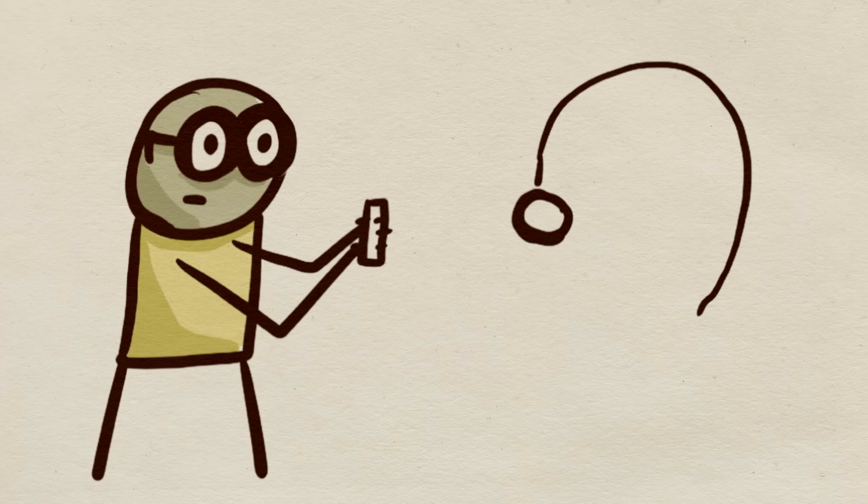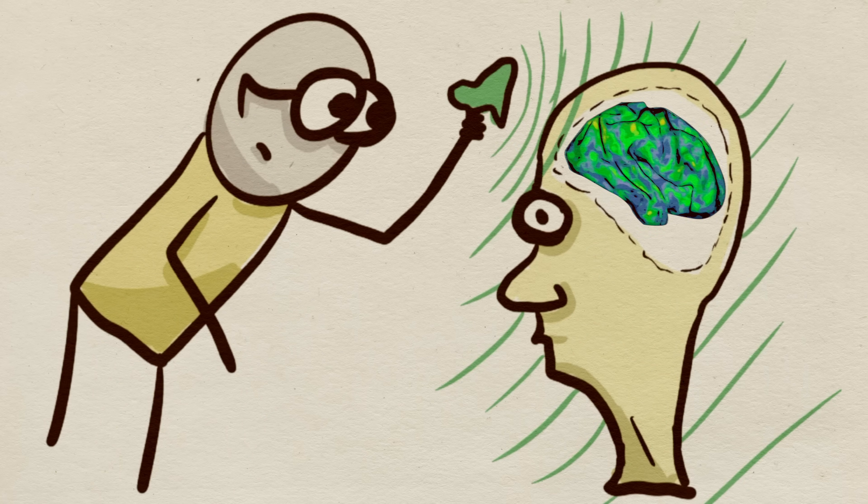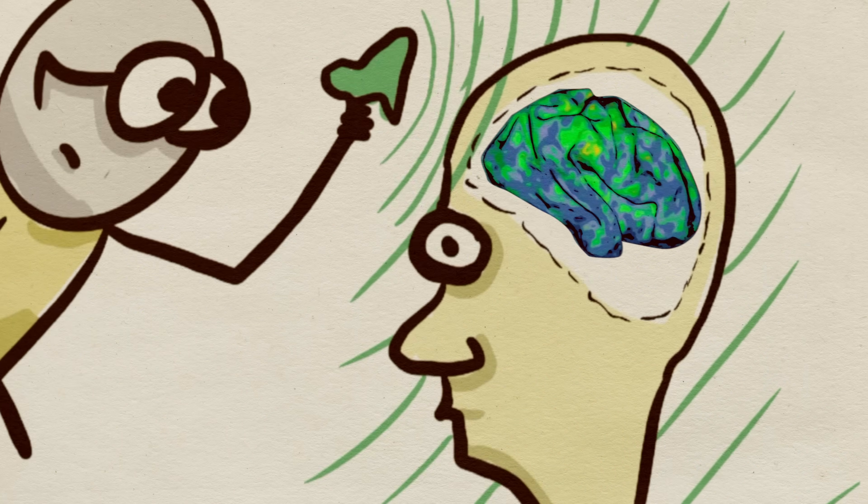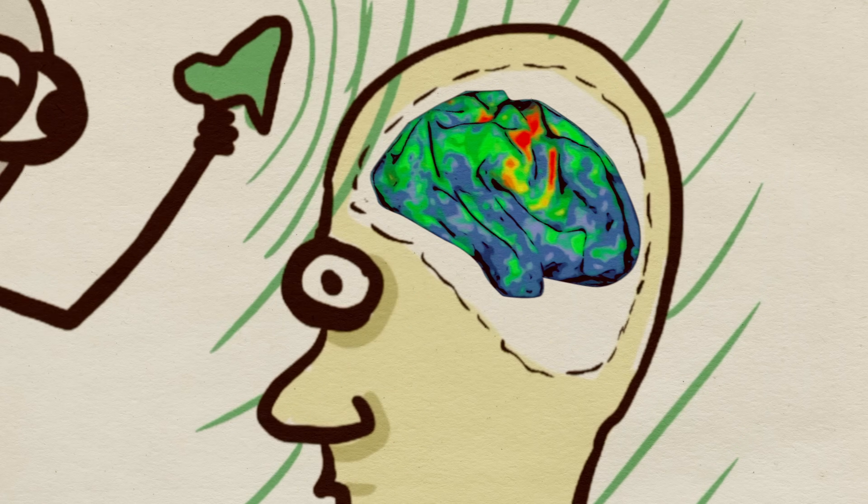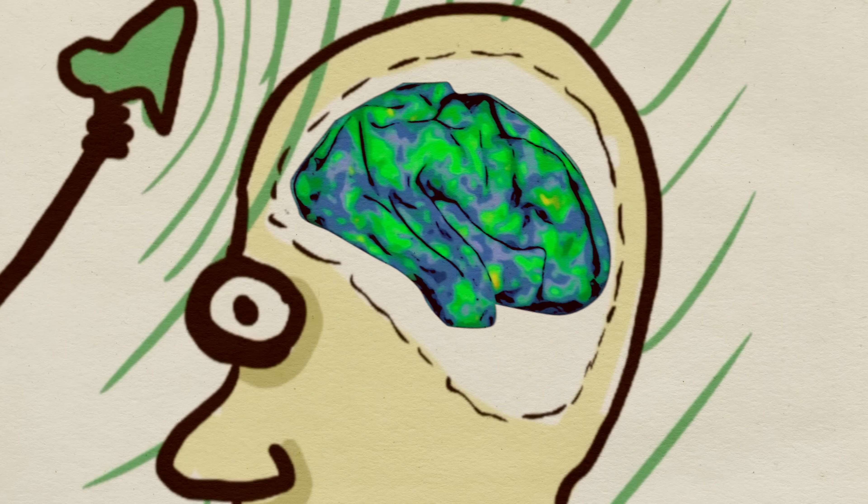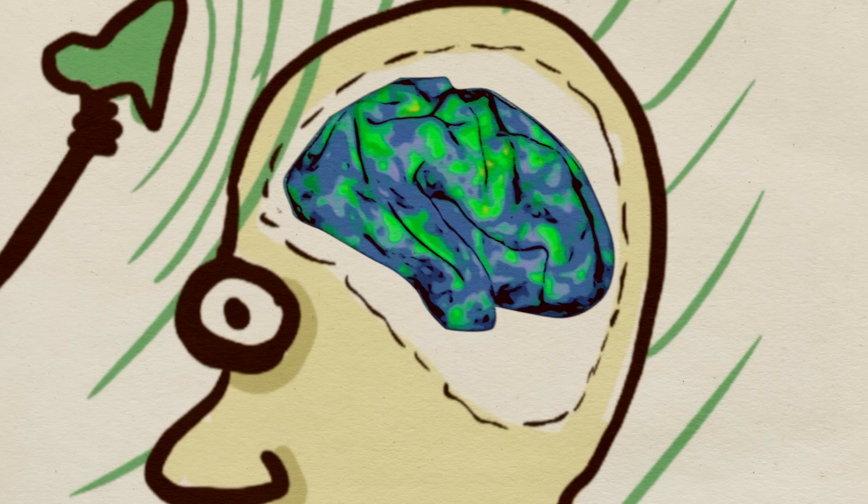So then researchers gave psilocybin to people, and they scanned their brain. It looked like this. It led to increased crosstalk across brain regions. And unless you're used to looking at brains, it's probably hard to tell here. So you can see it like this.